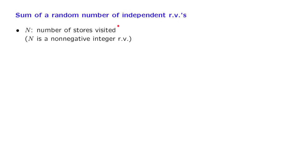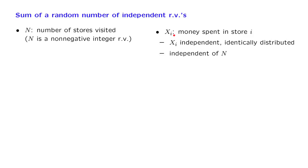The story goes as follows. You go shopping and you visit a number of stores, except that the number of stores that you will visit is itself a random variable. At each one of the stores, you spend a certain amount of money, we denote it by Xi. We make the assumption that the Xi's are drawn from a certain distribution, they're identically distributed, and they're independent of each other.